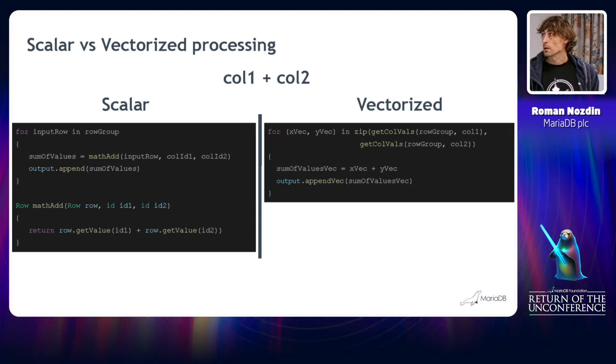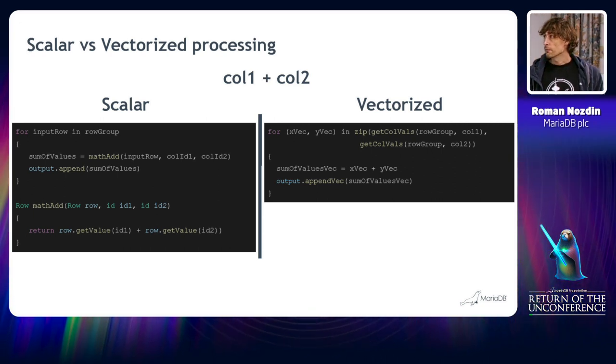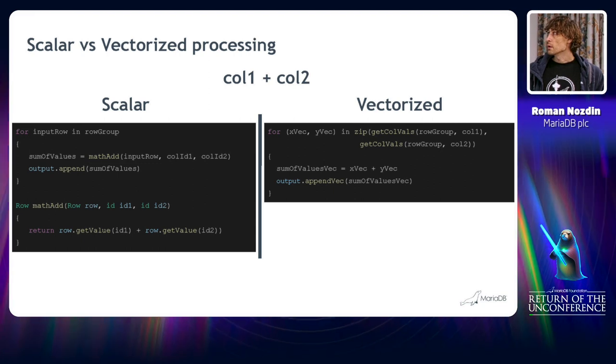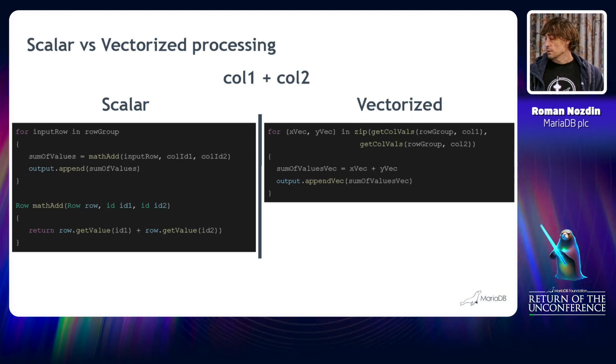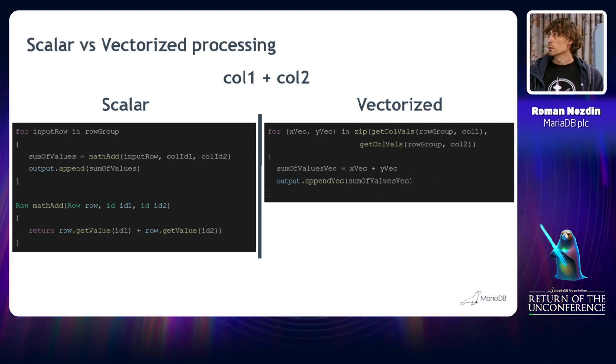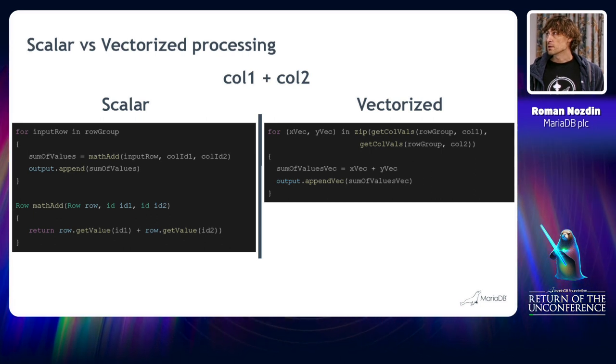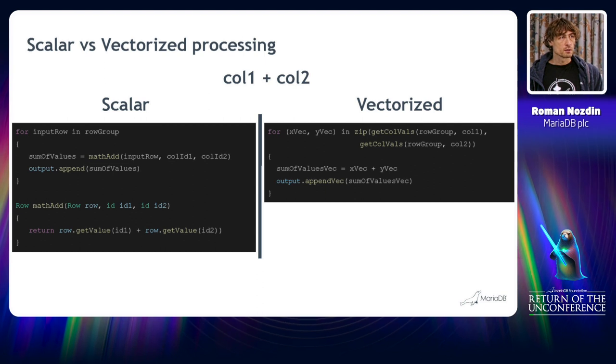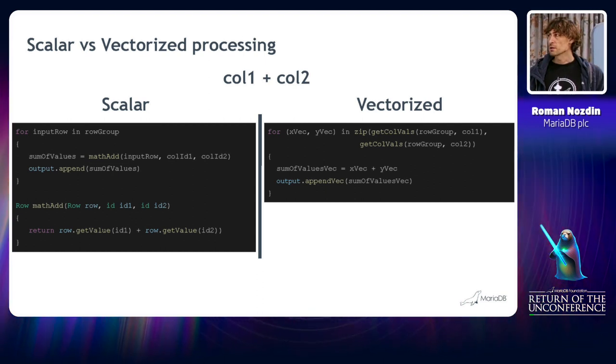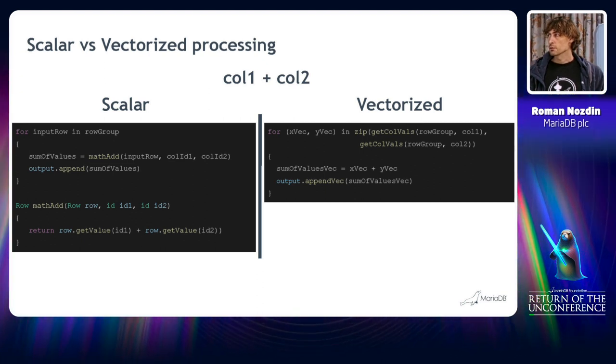Here are two pseudocode snippets that demonstrate the processing of scalar values and there is a counter example for a vectorized execution. As you can see at the top, we are talking about this particular expression, a simple one, a mathematical addition. On the left we see that we iterate over the rows in a certain row group and we get the value of the column and sum these values up. After that we append the resulting value into the output. That's how scalar processing works.